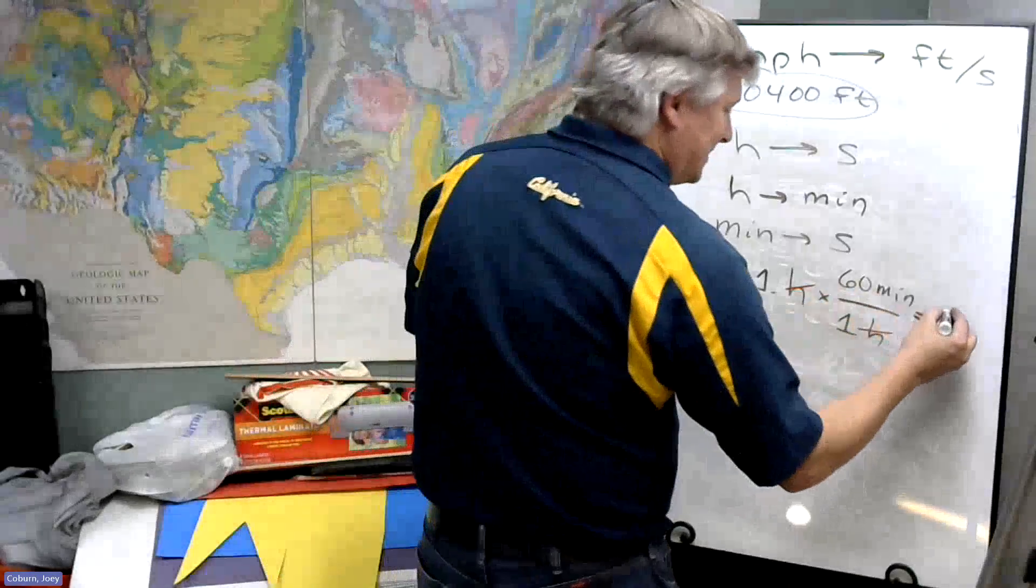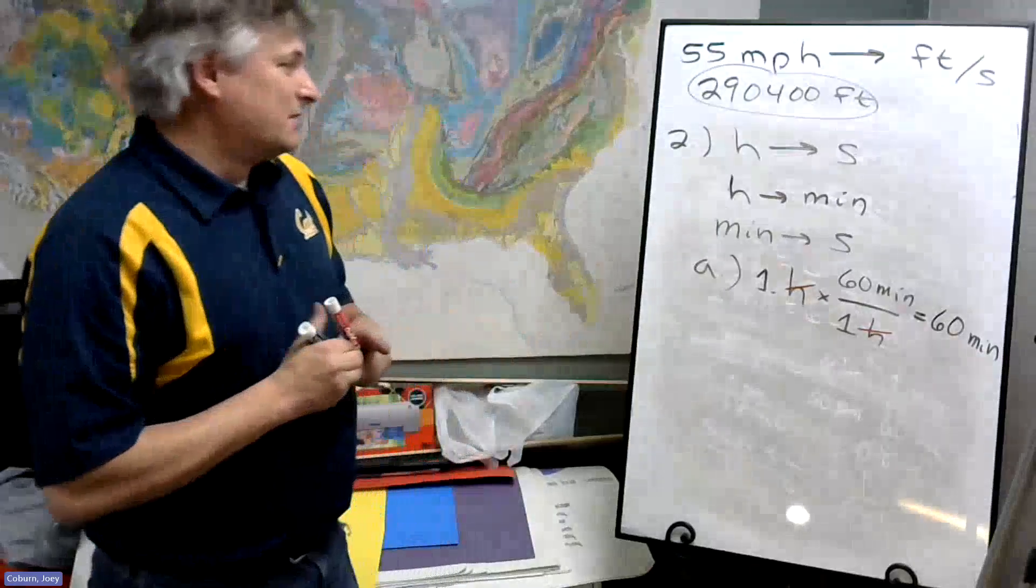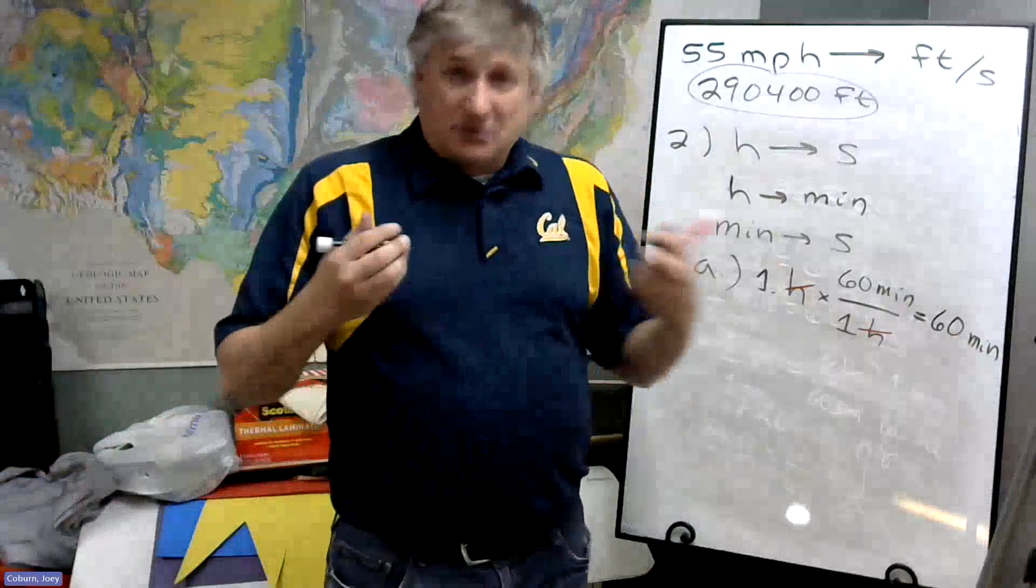So one times 60 divided by one is going to be 60, and we'll just tack on minutes at the end. So we get 60 minutes, which all right, fair enough. I mean, one hour is equal to 60 minutes.